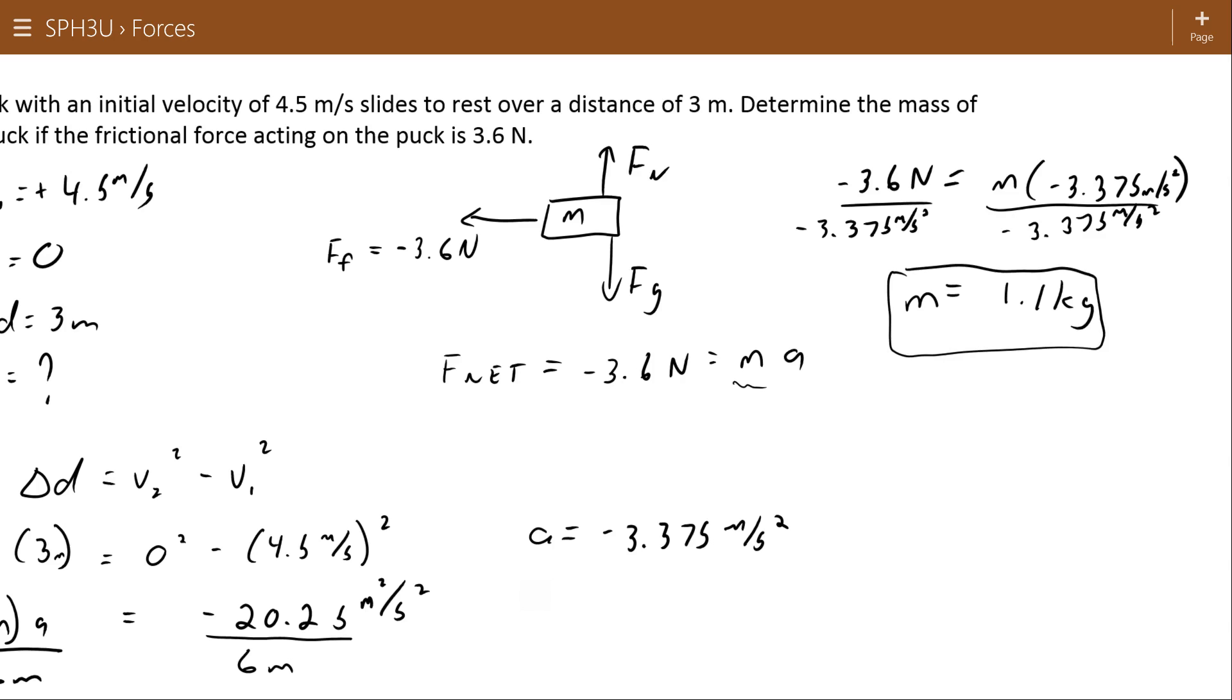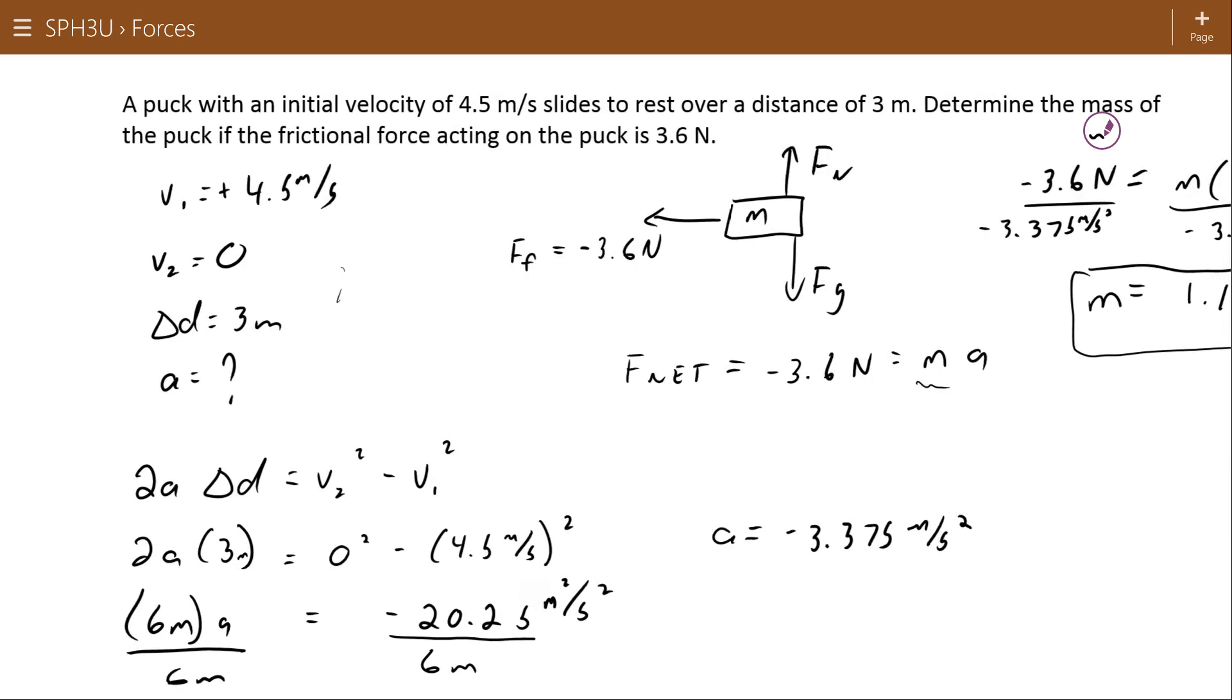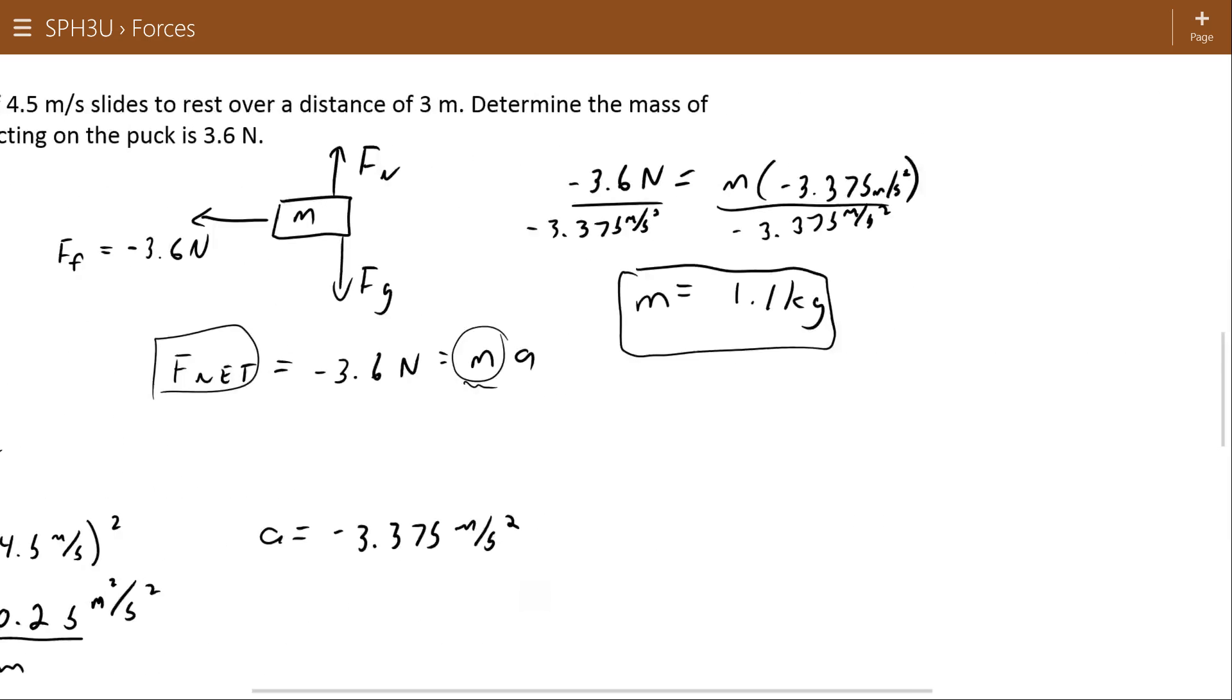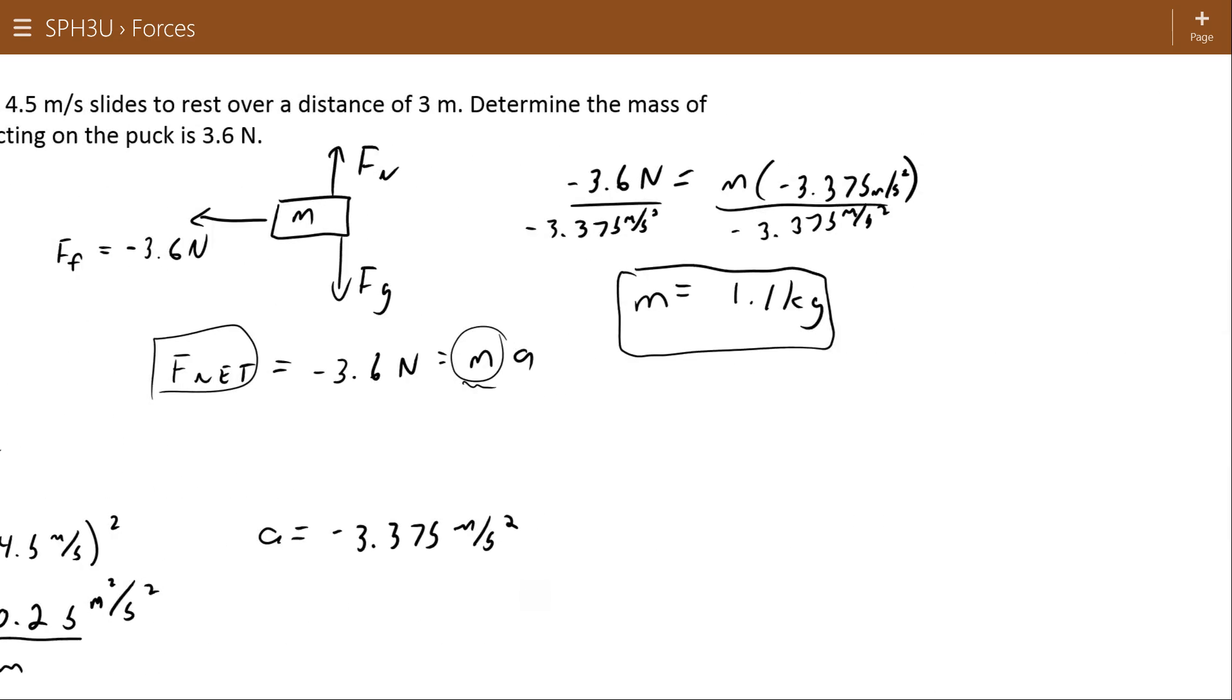So there you go another situation where we started with motion information. Again, you're always finding acceleration or you're finding net force. We happen to be given the net force this time, so when we had the net force and the acceleration, the only thing we were missing was the mass, which worked out to be 1.1 kilogram.